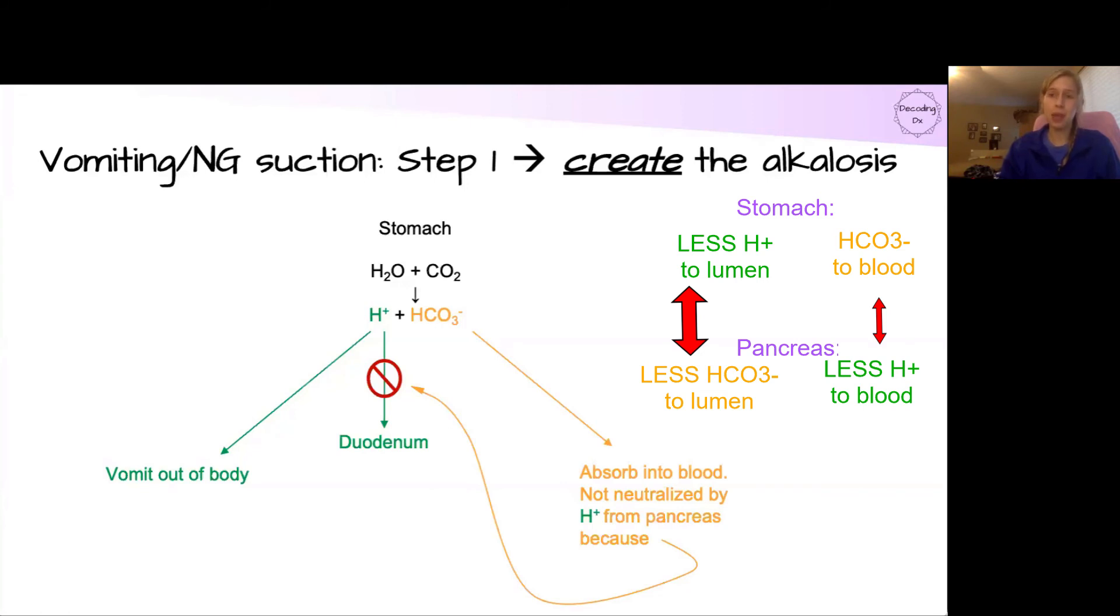And so, the reaction happening in the pancreas that is critical to balancing the effects of the stomach is not happening as much. So, we have a net absorption of bicarbonate into the blood without a parallel amount of hydrogen to neutralize it.